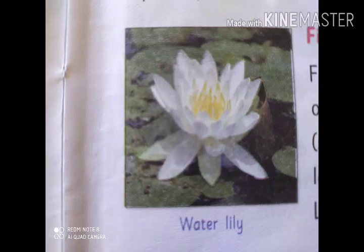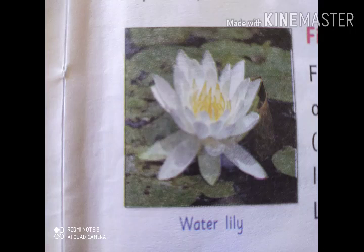The second type is fixed aquatic plants. Fixed plants have their roots fixed to the mud at the bottom of the pond. They have broad leaves, like the lotus and lily flower. The flat surface of the leaves helps the plant to get enough air and sunlight. Lotus and water lily are some fixed aquatic plants that grow in water.